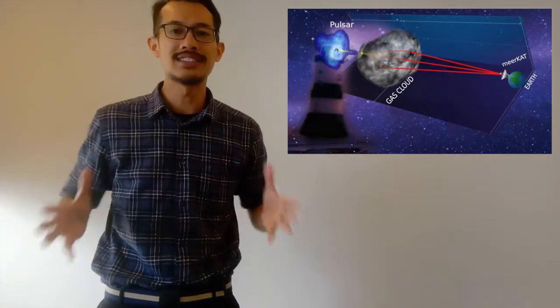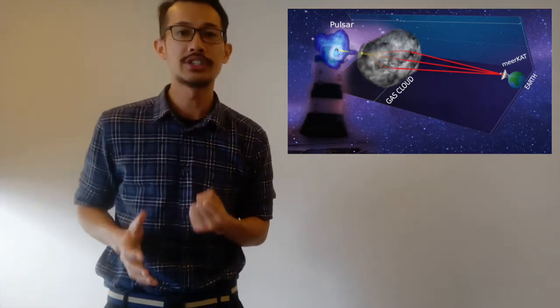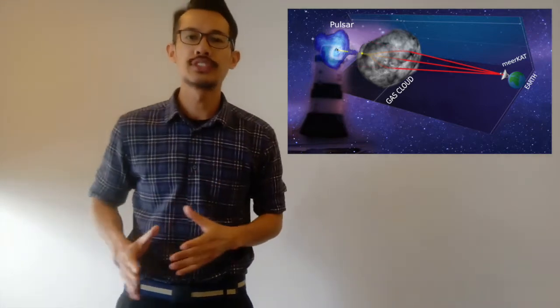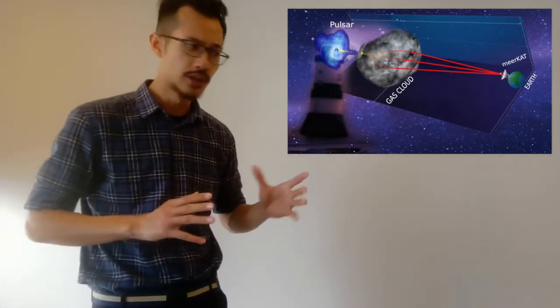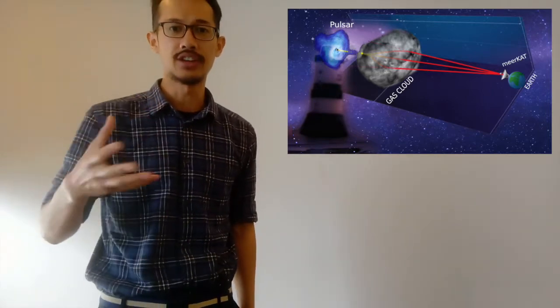They are useful in many ways that can make your life better. Pulsar rotation can be used to measure time more precisely than atomic clocks. Pulsars can be used to navigate aircraft as an alternative to GPS, and I am using them to test Einstein's theory of relativity.